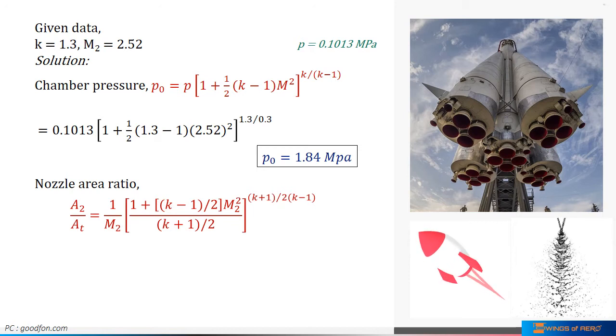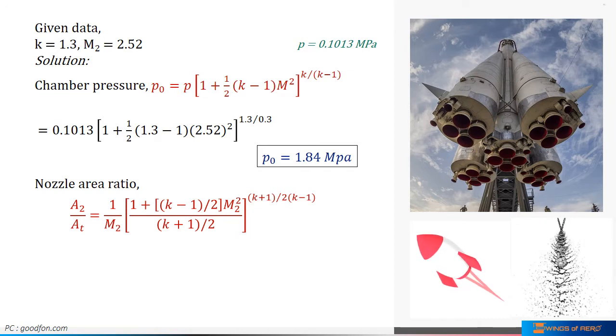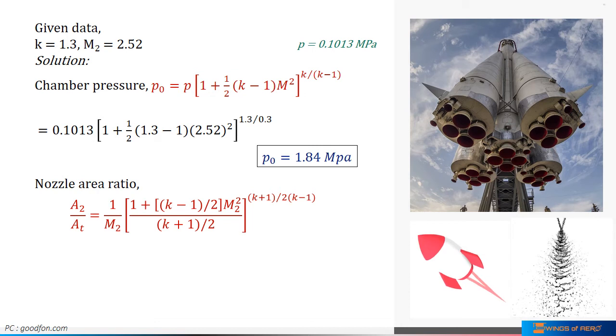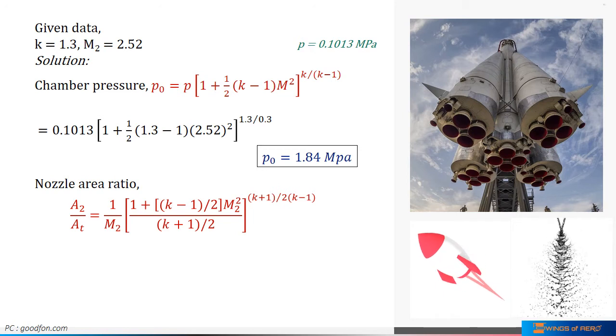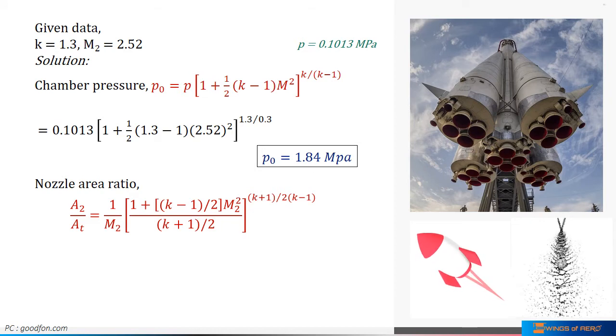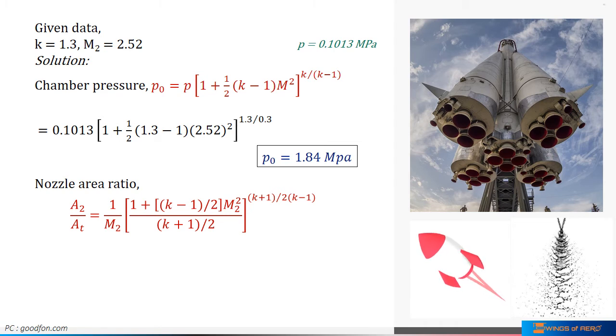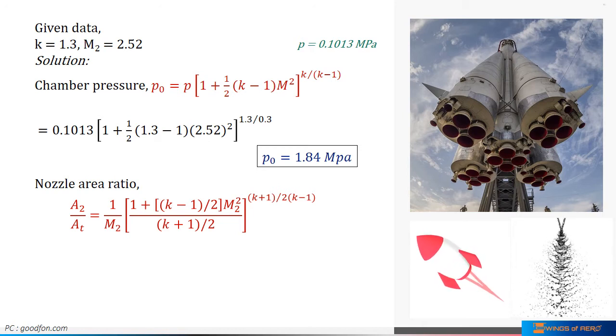Next, find the nozzle area ratio. The nozzle area ratio for isentropic flow expressed in terms of Mach numbers for two arbitrary locations within the nozzle. From this, we can write the ideal nozzle area ratio between exit area A2 and the throat area AT. So, A2 divided by AT is equal to 1 divided by M2 into 1 plus k minus 1 divided by 2 into M2 square divided by k plus 1 divided by 2 to the whole power k plus 1 divided by 2 into k minus 1.